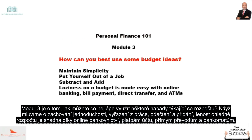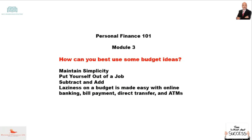Module 3 is about how you can best use budget ideas — maintaining simplicity, putting yourself out of a job, and subtracting an ad. Laziness on a budget is made easy with online banking, bill payment, direct transfers, and ATMs.